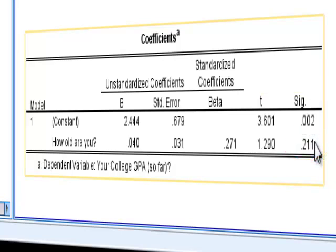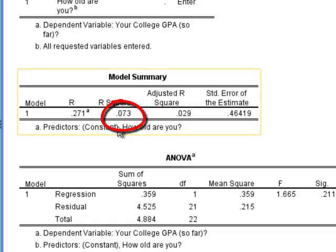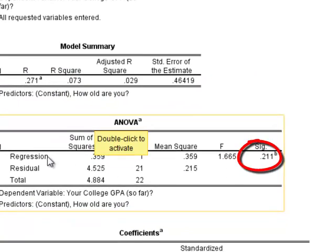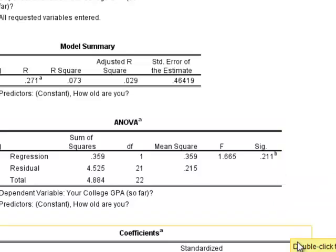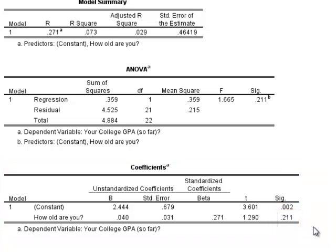Therefore, we retain the null hypothesis. There is no supported relationship between college GPA and age, meaning age does not statistically affect college GPA. We could have seen this from the R-squared value of 7.3%, which is not a lot. The p-value from the ANOVA for regression is 0.211, and the p-value for the slope is also 0.211 — not a statistically significant p-value. So we fail to reject the null hypothesis of no relationship, meaning age does not really affect college GPA.